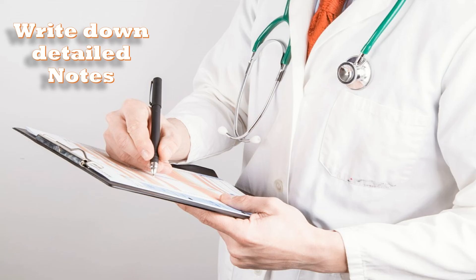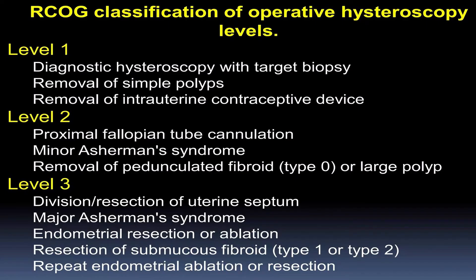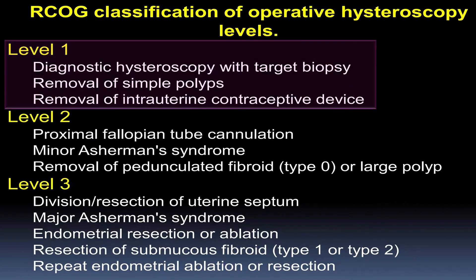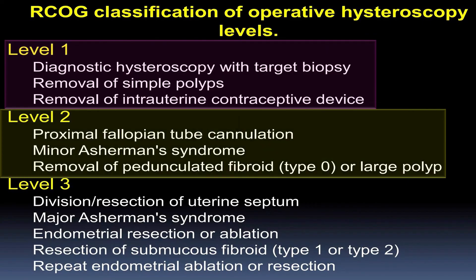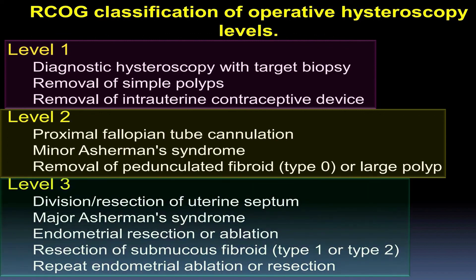The RCOG classification of hysteroscopy procedures includes: Level 1 — diagnostic hysteroscopy, targeted biopsy, removal of polyp, and removal of IUCD; Level 2 — proximal tube cannulation, minor Asherman's syndrome, removal of pedunculated fibroid or large polyp; Level 3 — more complex procedures such as endometrial resection and ablation, division and resection of the septum, and endoscopic surgery for major Asherman's syndrome.